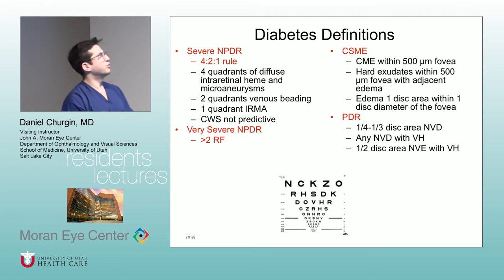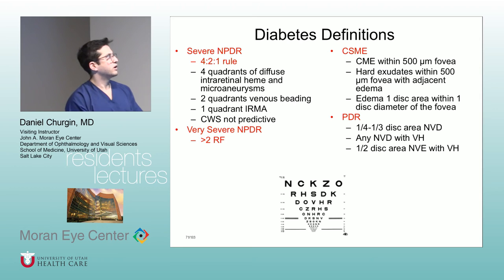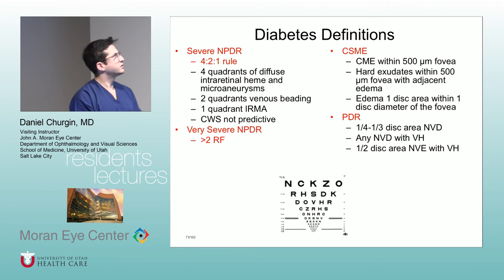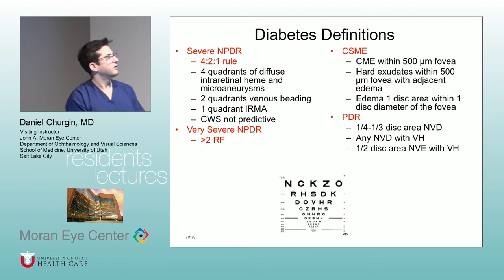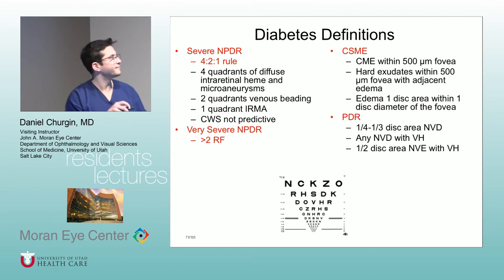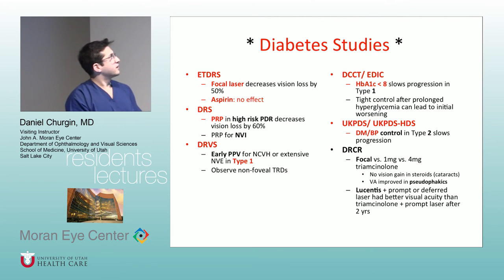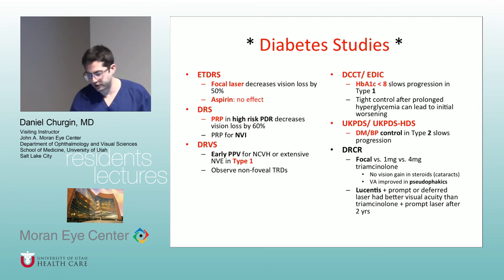You probably know the 4-2-1 rule: 4 quadrants of diffuse intraretinal hemorrhage and microaneurysms; 2 quadrants of venous beading or 1 quadrant of IRMA — that is the definition of severe NPDR. Very severe is greater than 2 of those criteria. CSME is CME within 500 microns of the fovea; hard exudates within 500 microns of the fovea with adjacent CME or edema; one disc area of edema within one disc diameter of the fovea. PDR is a quarter to a third disc area of NVD, or any NVD with vitreous hemorrhage, or a half disc area of NVE with vitreous hemorrhage. Clinically many times we just see vitreous hemorrhage and can't identify the neovascularization.